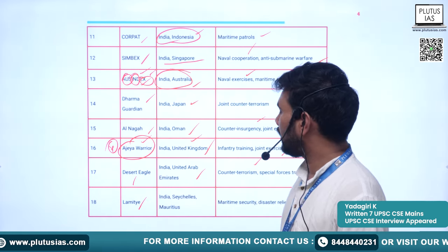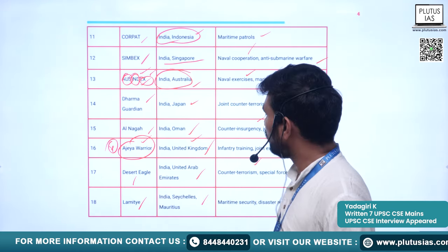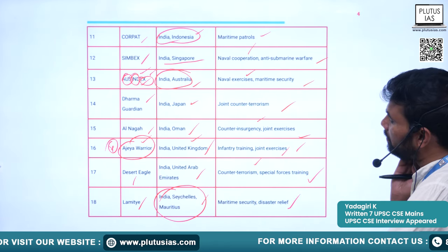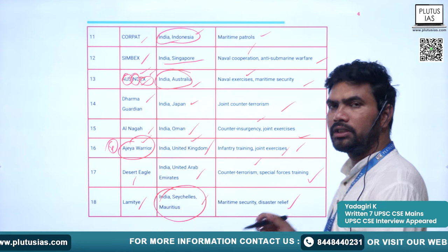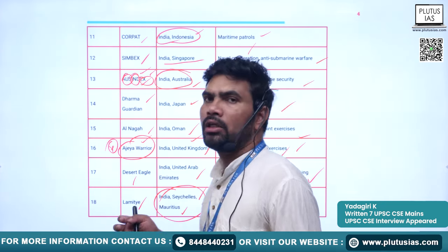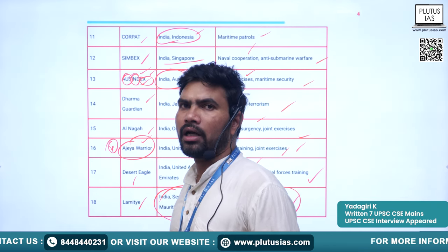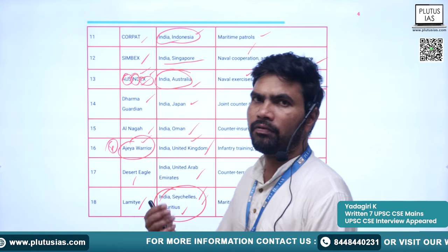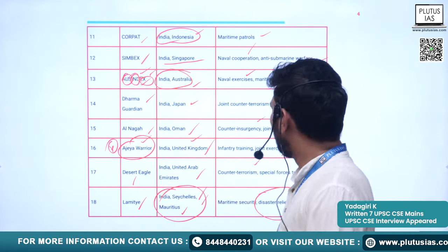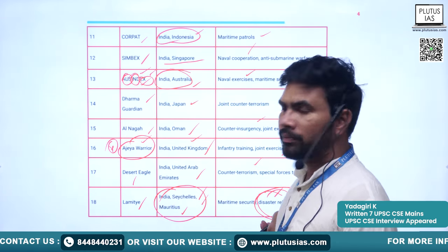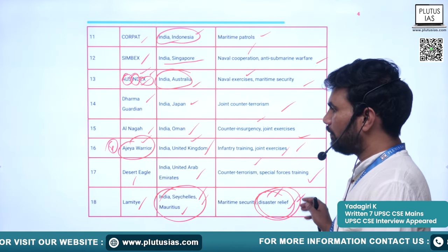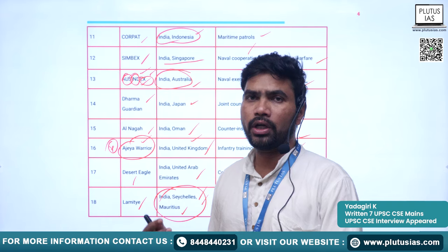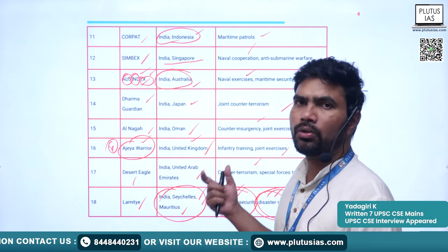Lamitie is between India, Seychelles, and Mauritius — a multilateral exercise as more than two countries are involved — with thematic areas of maritime security and disaster relief. When smaller countries like Seychelles, Mauritius, and Maldives are affected by disasters, India acts as the first responder. Because of this, India conducts exercises involving disaster management and maritime security with these countries.